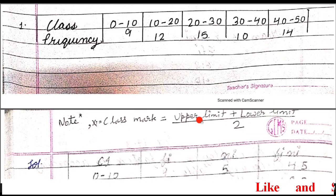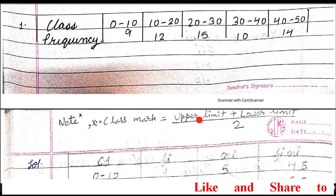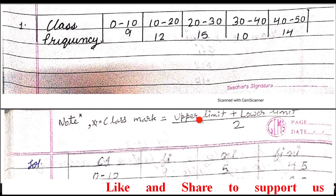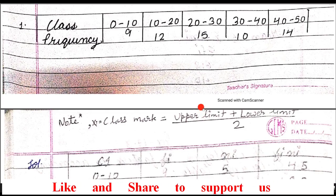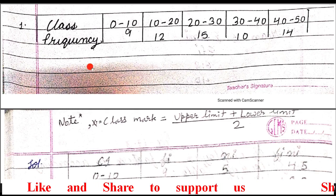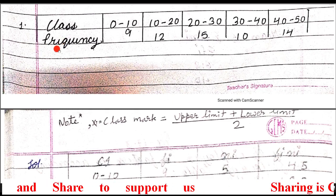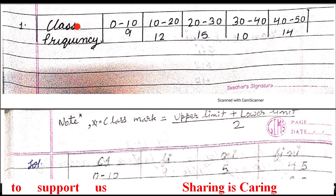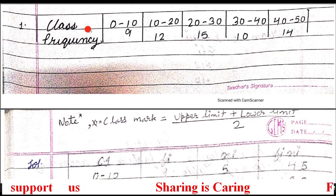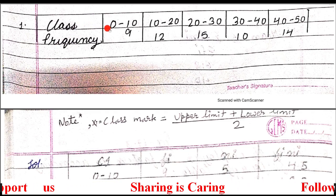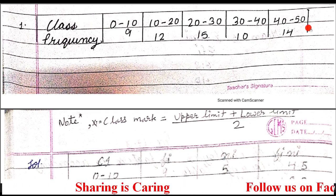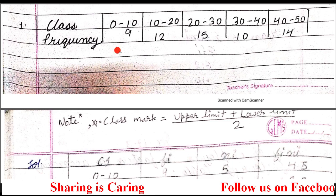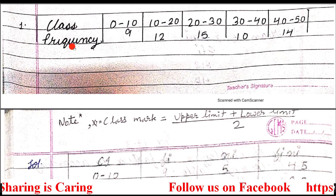Hello everyone. Today I am going to explain question 1 of Exercise 17.3 of Class 10. The question is, we have to find out the mean of the following frequency distribution. Here, data are grouped — these kinds of tables are named as grouped distribution data.